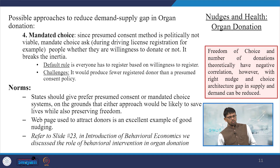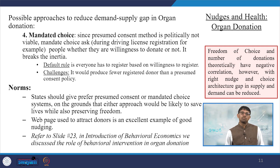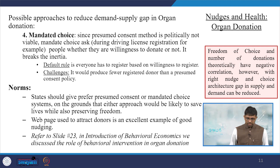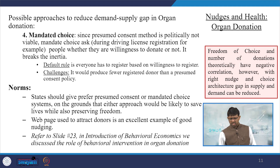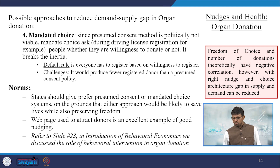Another approach to reduce the demand-supply gap is mandated choice. Since the presumed consent method is politically not viable, mandated choice asks — for example during driving license registration, which is mandatory — whether people are willing to donate or not. It breaks inertia. However, the challenge is that it would produce fewer registered donors than a presumed consent policy. In the case of organ donation, freedom of choice and number of donations theoretically have a negative correlation. However, with the right NOSes and choice architecture, the gap in supply and demand can be reduced.